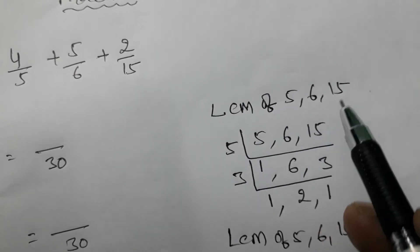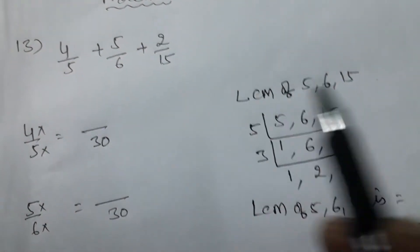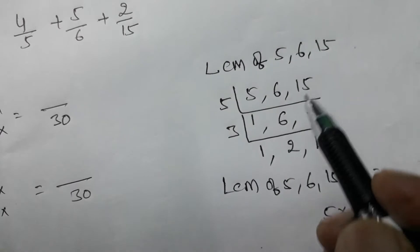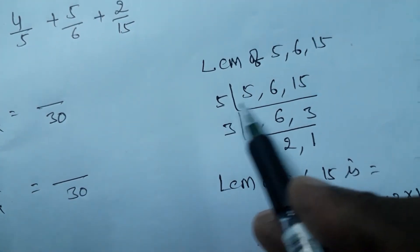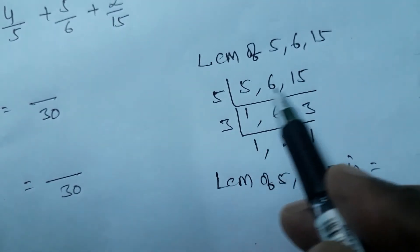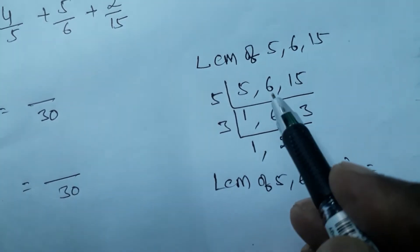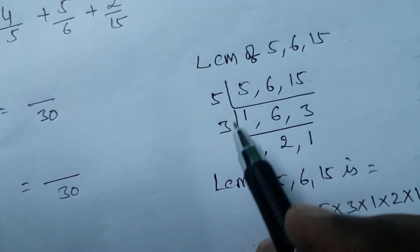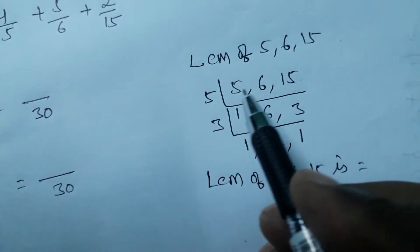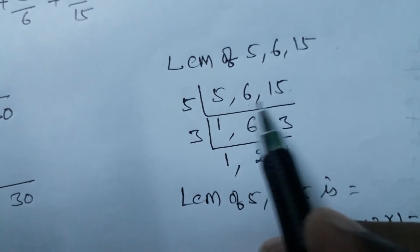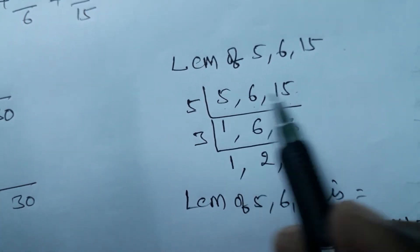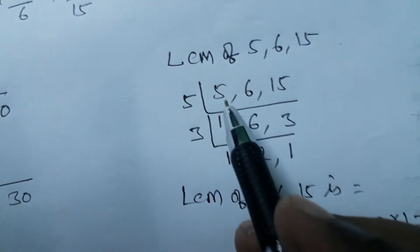Finding the LCM of 5, 6, and 15 is the most important part of this problem, so you must learn LCM. Take the numbers 5, 6, 15 and try to divide all three by a common number. Five is a prime number, so no single number divides all three. If three numbers are not all divisible, then choose a divisor that works for at least two — for example, 5 and 15 are both divisible by 5.